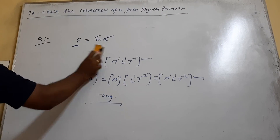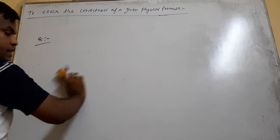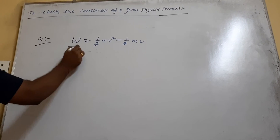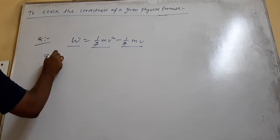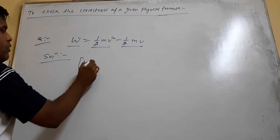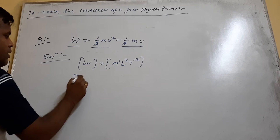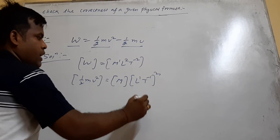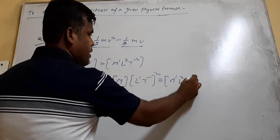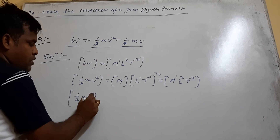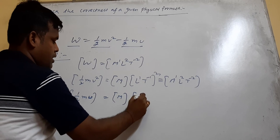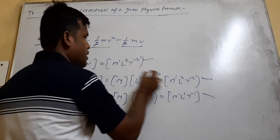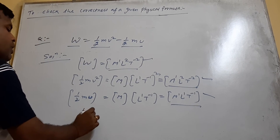Don't write 'dimensionally incorrect' or 'dimensionally wrong' — if it is dimensionally wrong, simply write it is wrong, because there is no chance for it to be correct. Now come to another question: W equals half mv² minus half mu. Here these are individual terms. W has dimensions M¹L²T⁻². Half mv²: half has no dimension, M¹, multiplied by (L¹T⁻¹)², gives M¹L²T⁻². But half mu: M¹ multiplied by L¹T⁻¹ gives M¹L¹T⁻¹. The dimensions are not the same, so this formula is wrong.